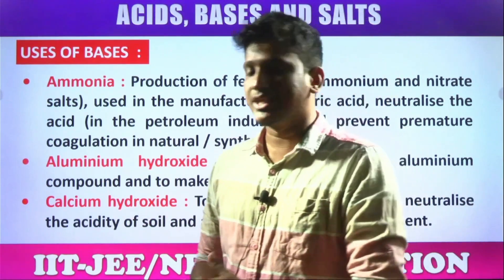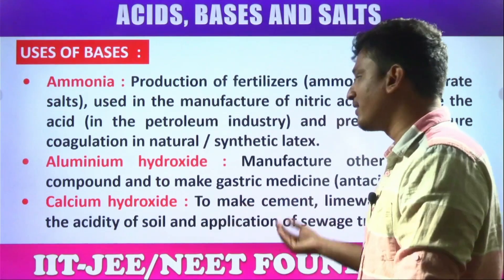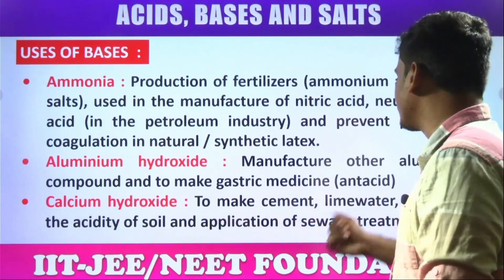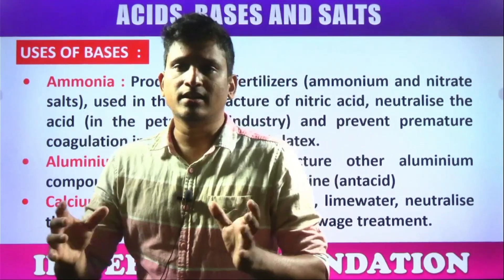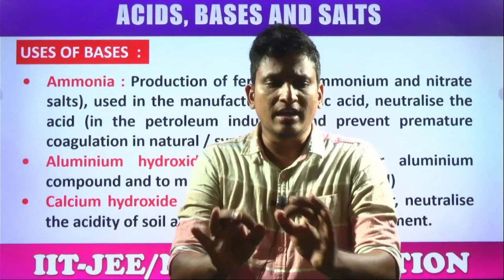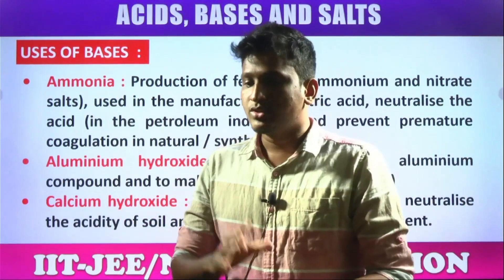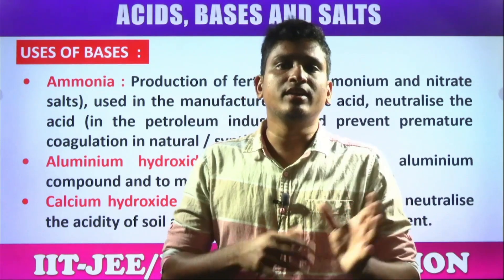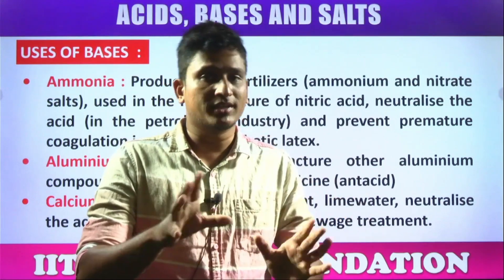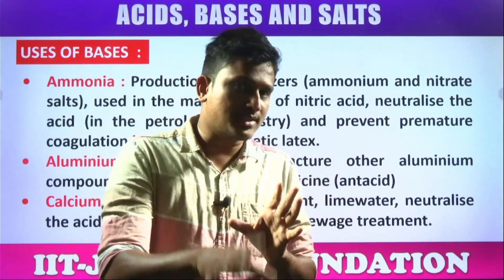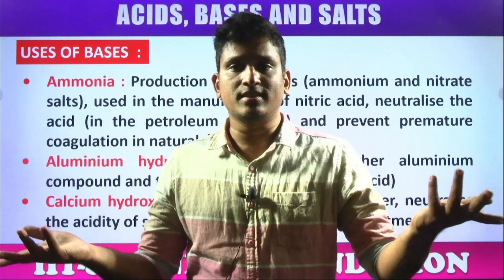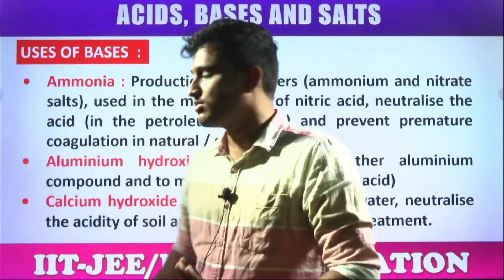Calcium hydroxide Ca(OH)₂: used to make cement, mainly in the cement industry — cement comes from lime or limestone, which is calcium carbonate. Calcium hydroxide is also used to neutralize the acidity of soil and in sewage treatment. If a particular soil is acidic, we can add calcium hydroxide to neutralize it because it reduces soil acidity without harming plants.